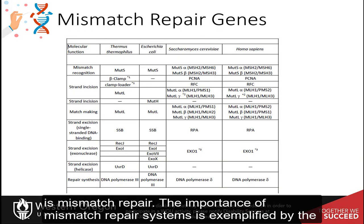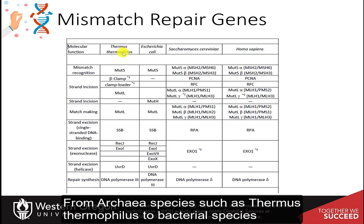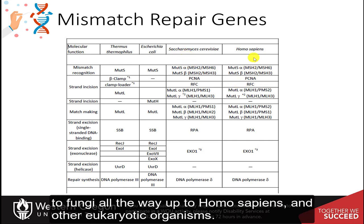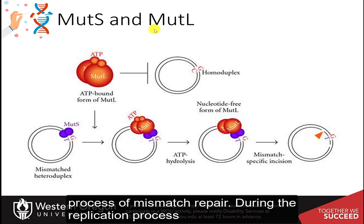The importance of mismatch repair systems is exemplified by the fact that the system is highly conserved in all major organisms on the earth — from archaeal species such as Thermus thermophilus, to bacterial species, to fungi, all the way up to Homo sapiens and other eukaryotic organisms. In bacterial systems, MutS and MutL proteins begin the process of mismatch repair.